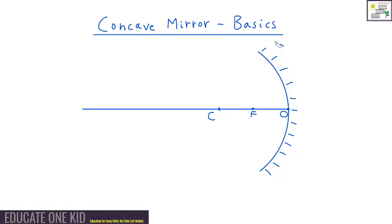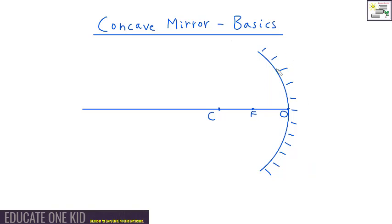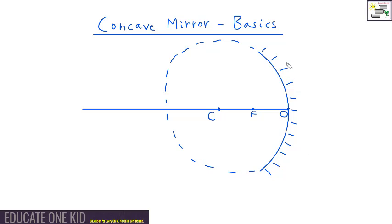The concave mirror is shaped like this. What you have to imagine is that this mirror is part of a circle, or more precisely a sphere. You can see the concave mirror is just a part of that circle.